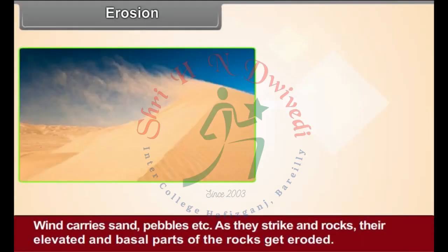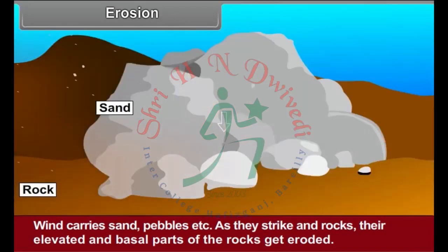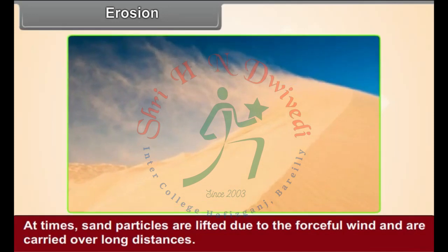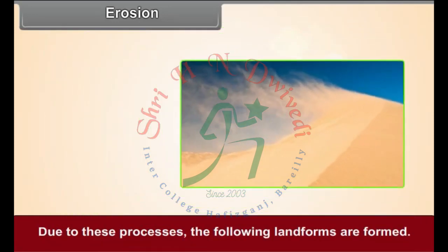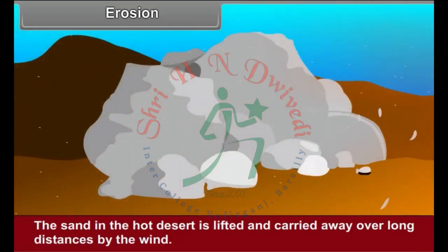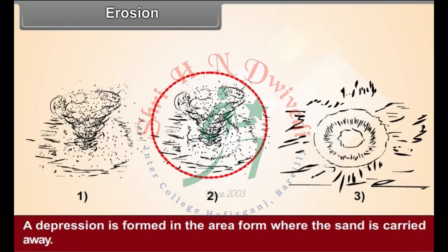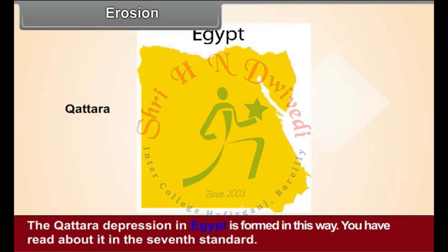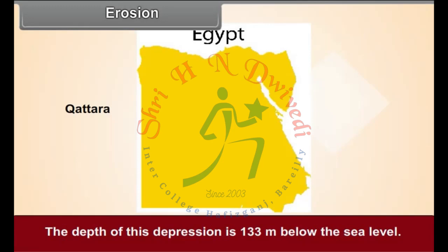Erosion by Wind: Wind carries sand, pebbles, etc. As they strike and scratch the rocks, their elevated and basal parts get eroded. At times, sand particles are lifted by forceful winds and are carried over long distances. Deflation Hollows: The sand in hot deserts is lifted and carried away over long distances by the wind. A depression is formed in the area from where the sand is carried away — such depressions are called deflation hollows. See figure 9.11. The Qattara depression in Egypt is formed in this way. Its depth is 133 meters below sea level.